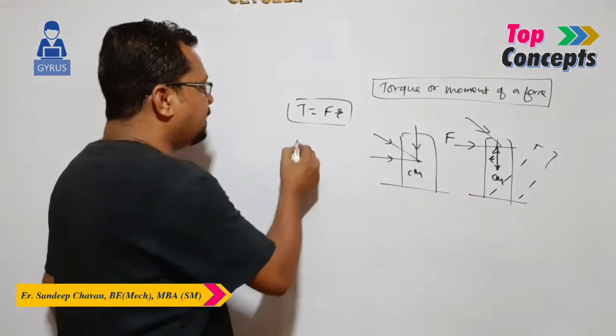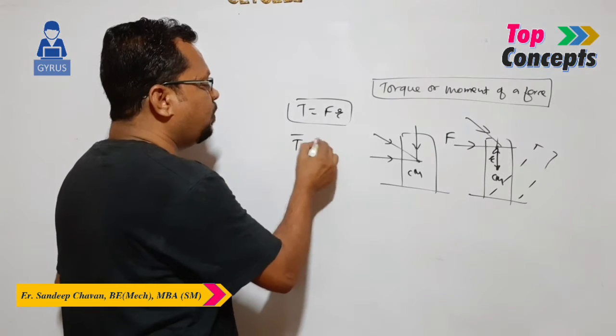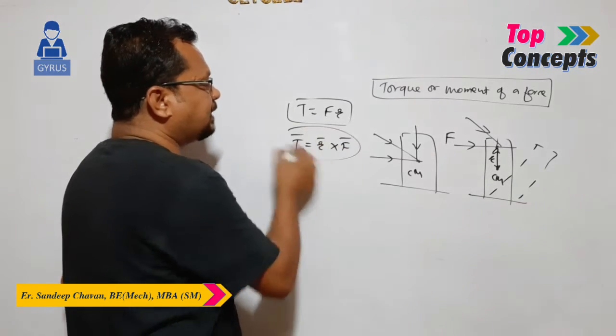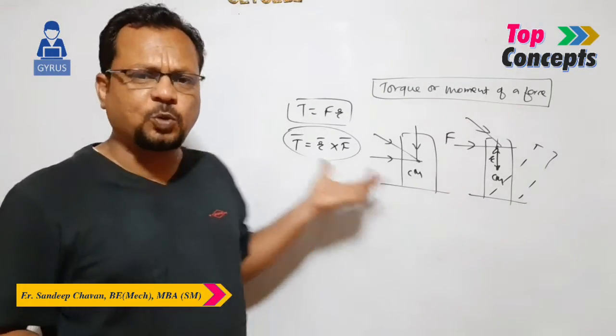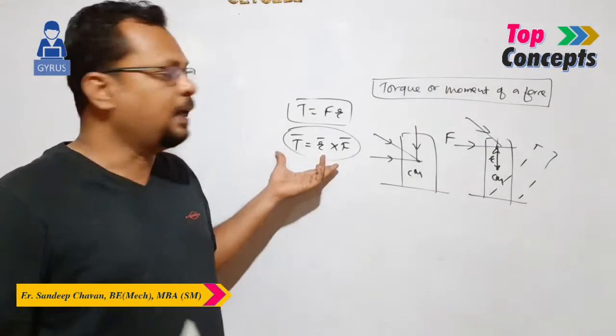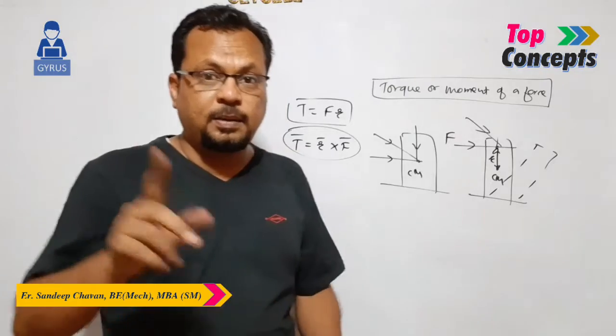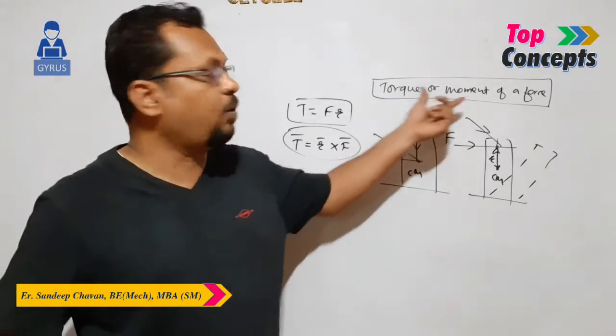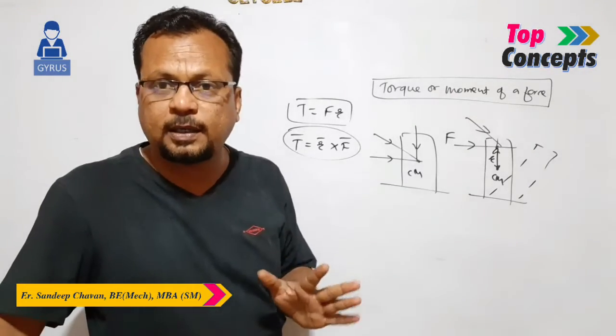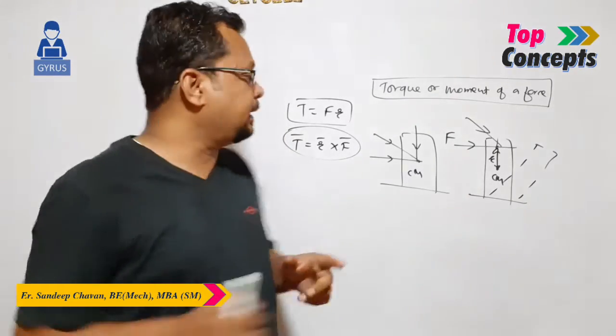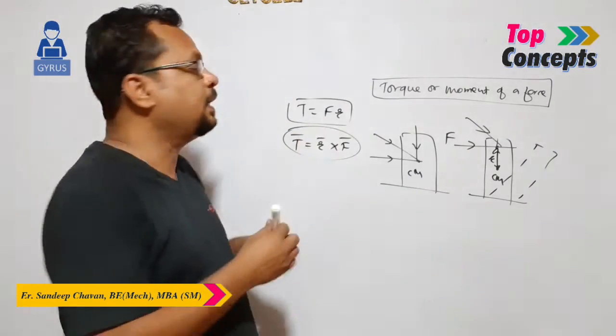In vector form, tau bar equals R bar cross F bar. That is a vector product. Torque is a physical quantity, a vector quantity. It is given by force into distance. Its unit is Newton meter.